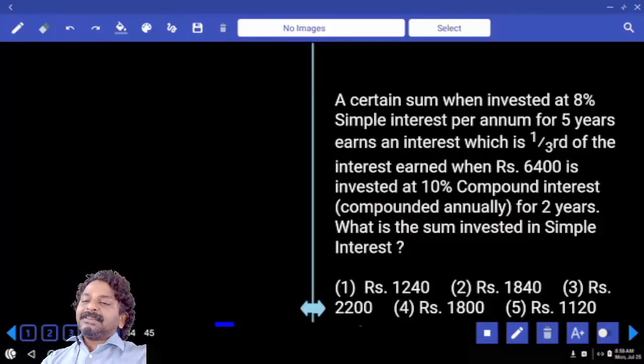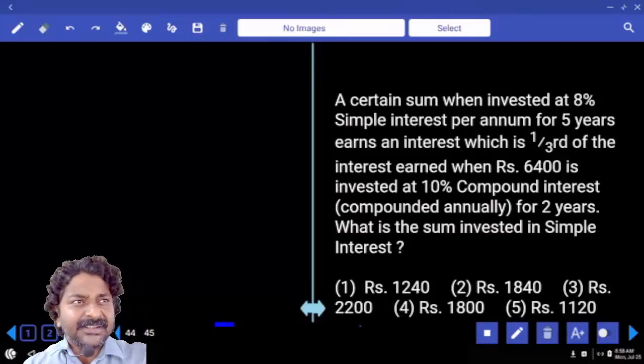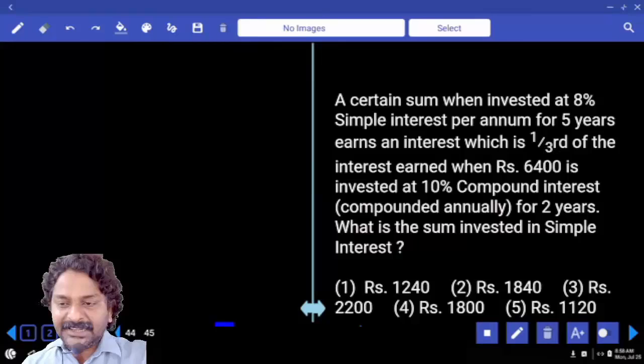A certain sum when invested at 8% simple interest per annum for 5 years - how much interest will we get? Come on, 40% interest.